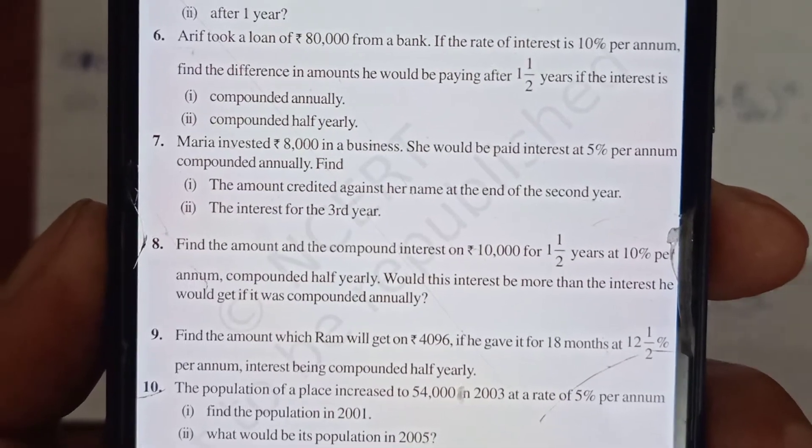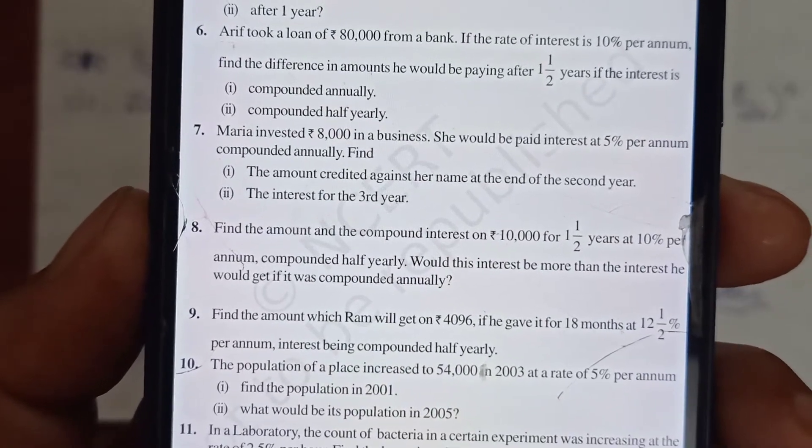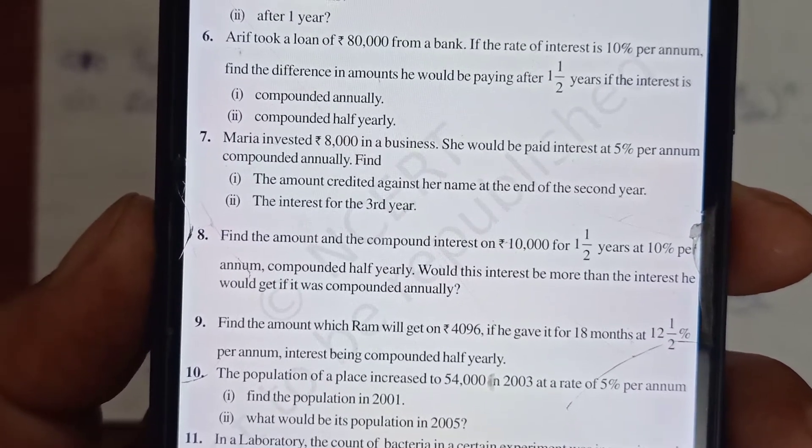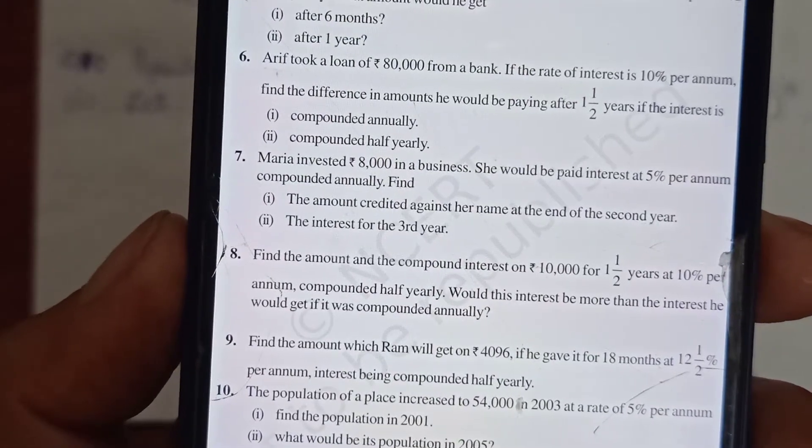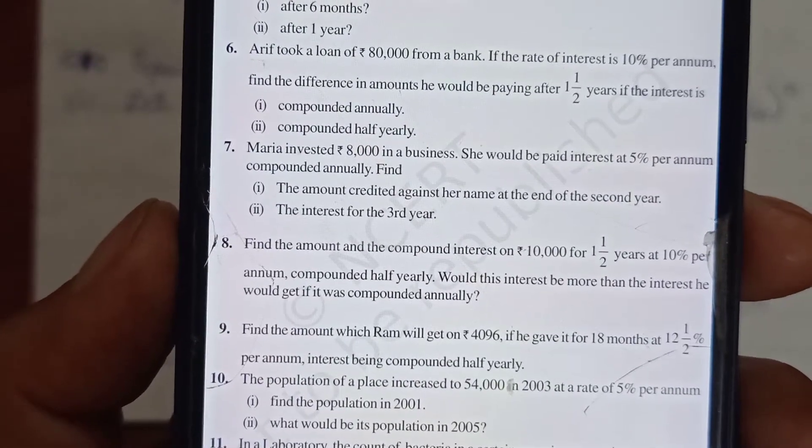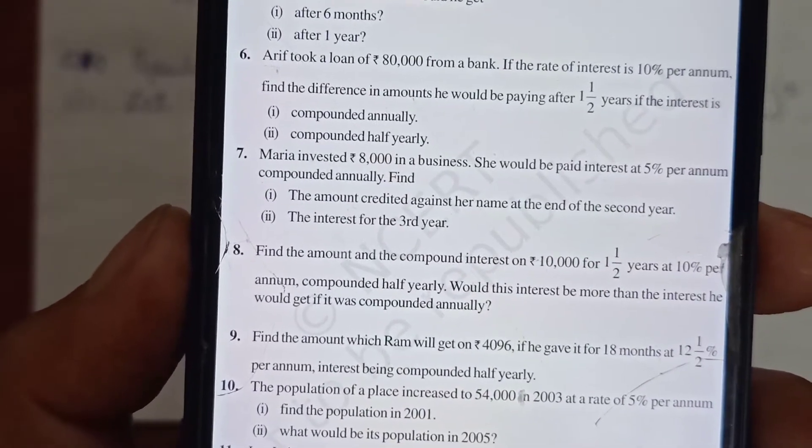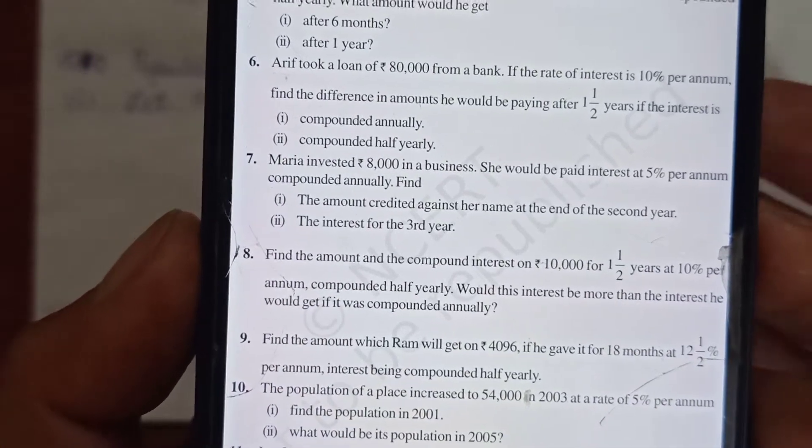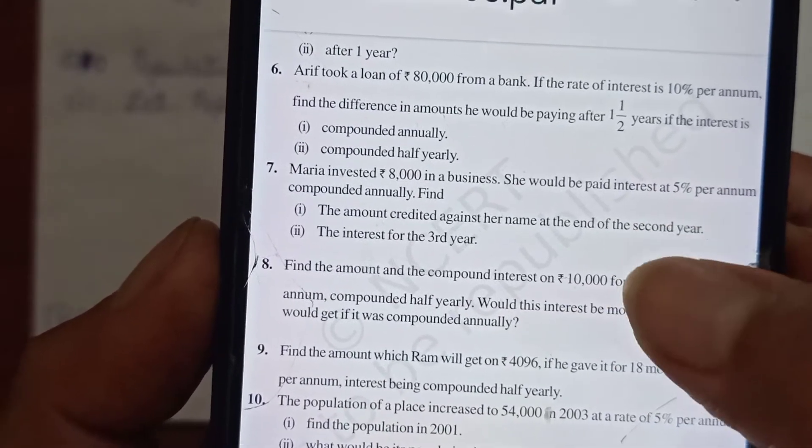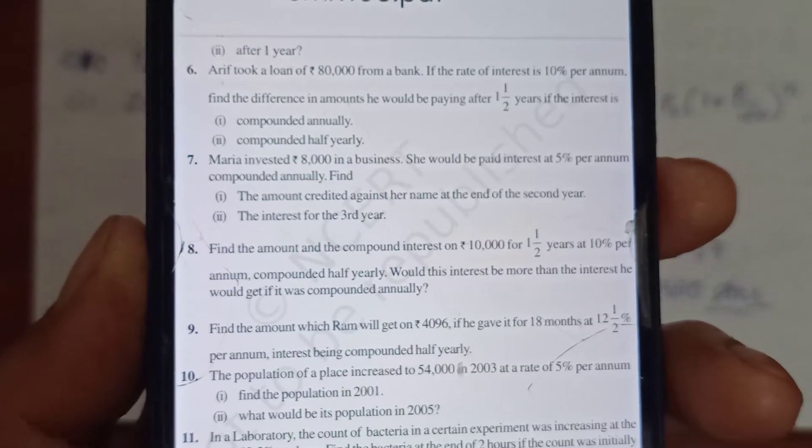Whatever amount you have at the end of second year, taking that as your principal, you can find the interest for the third year by P×T×R/100. Time will be one year, rate remains 5%, and principal will be the amount after two years. Or you can find the amount up to three years by taking n as 3, then the difference between these two amounts will give you the third year's interest. You can do it directly or find both amounts and take their difference.